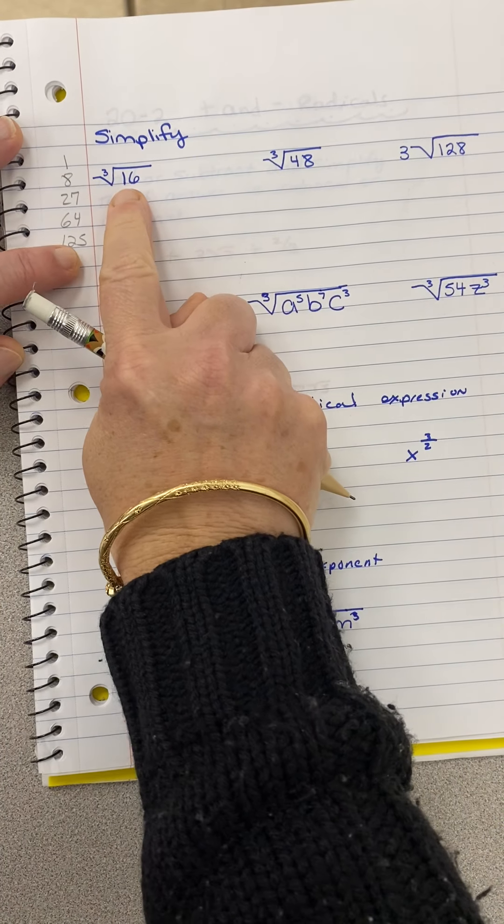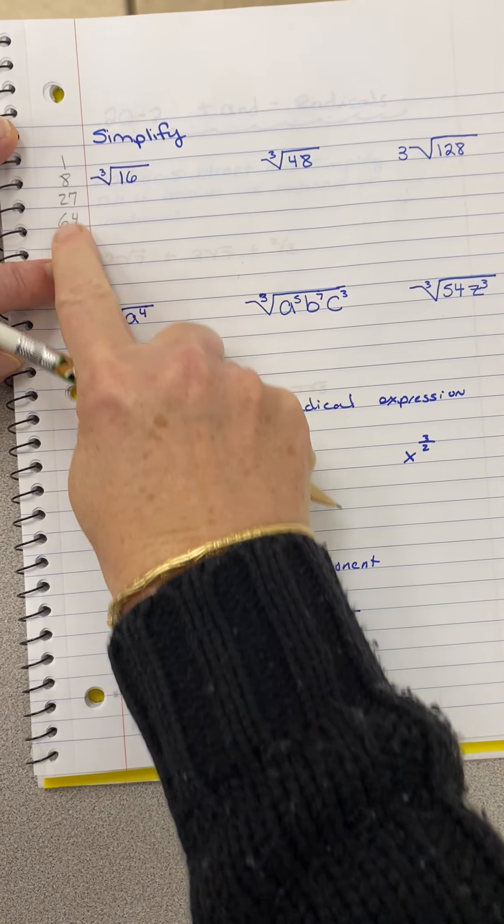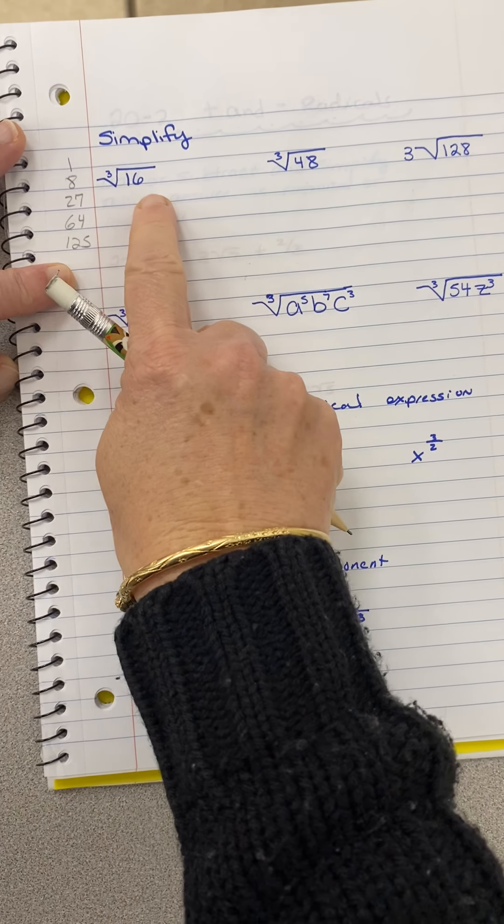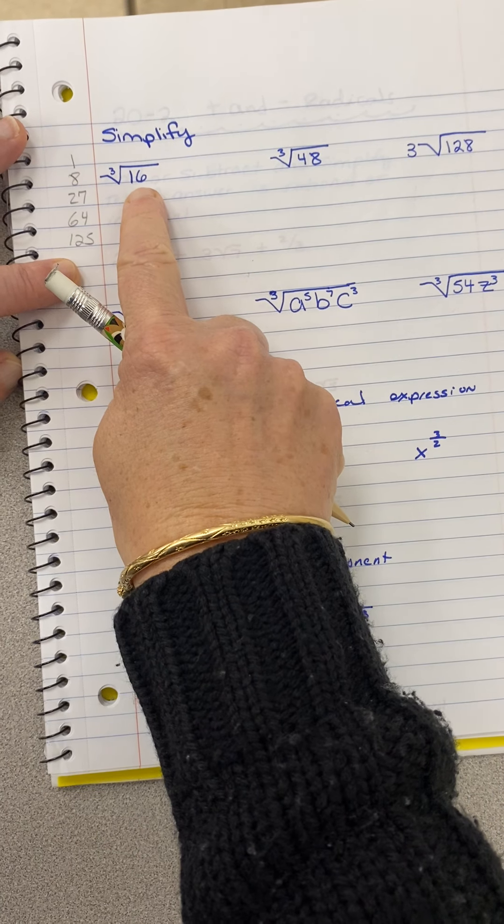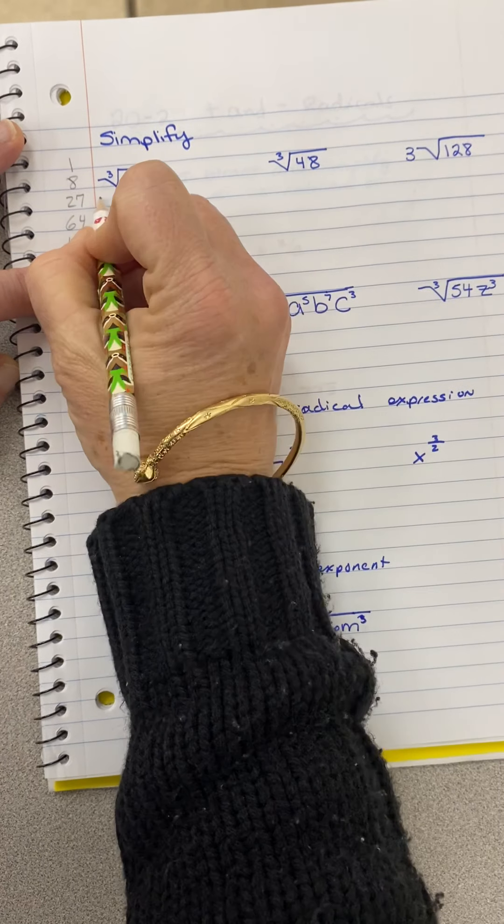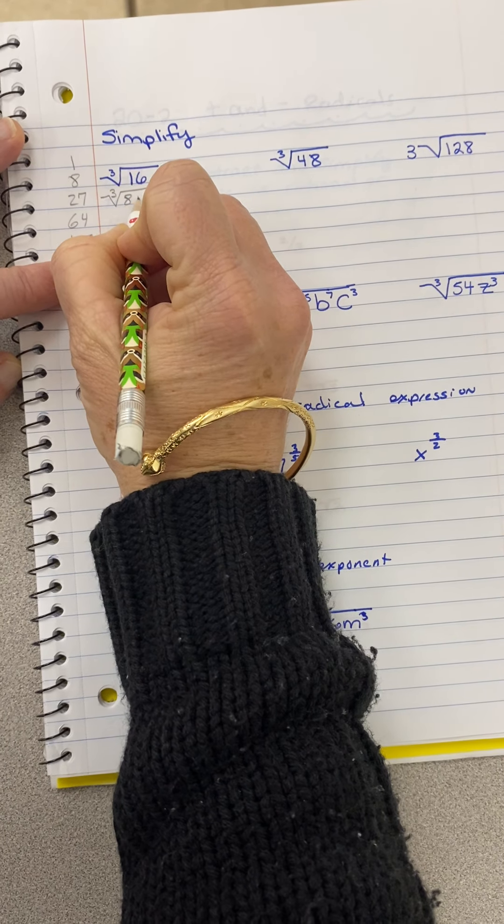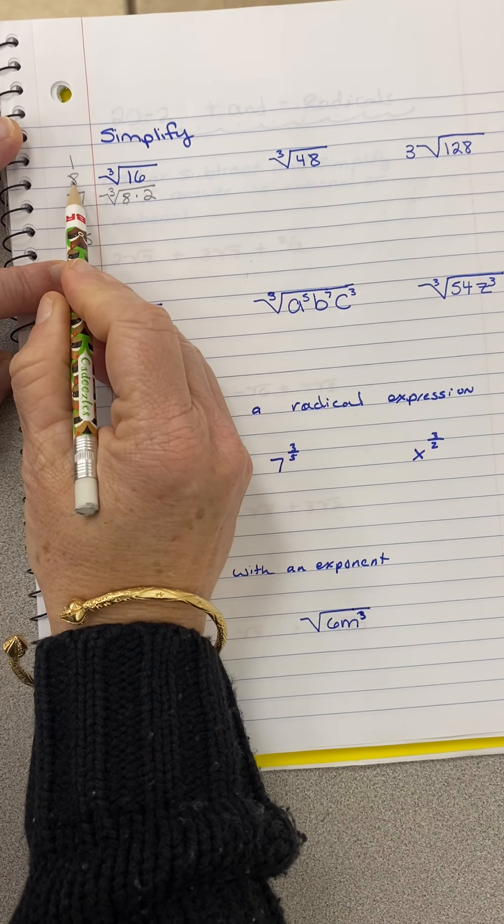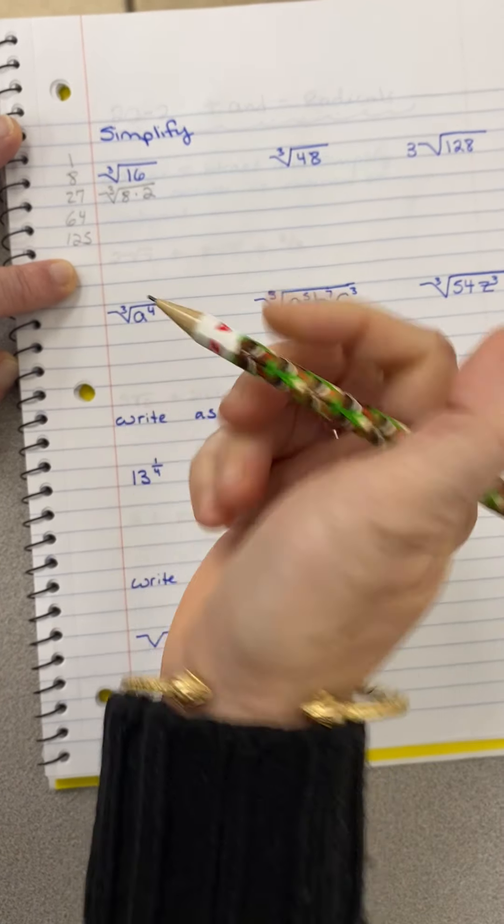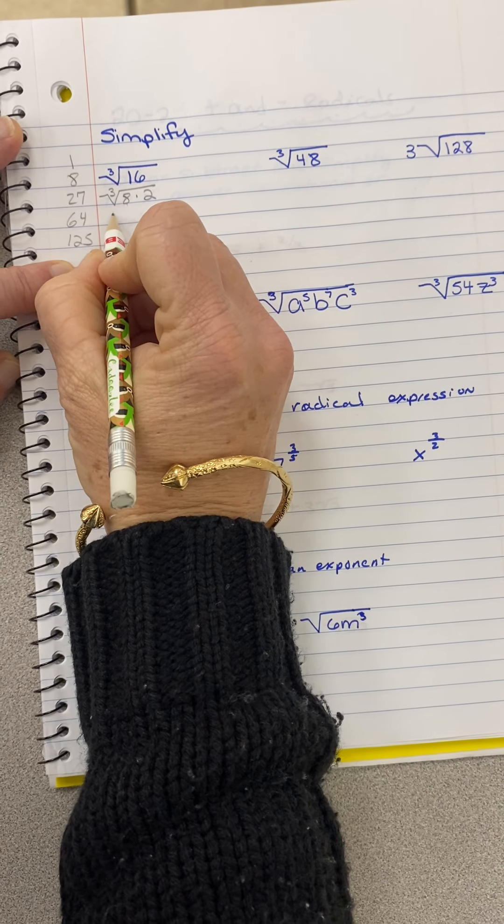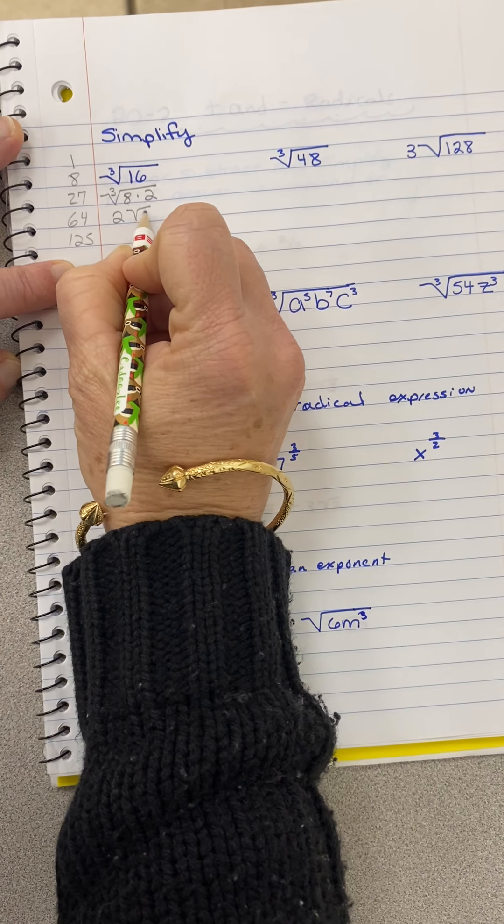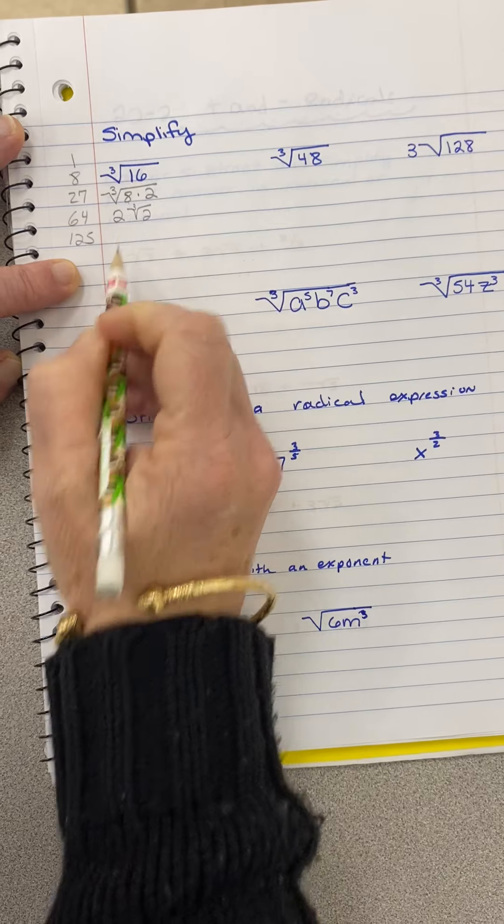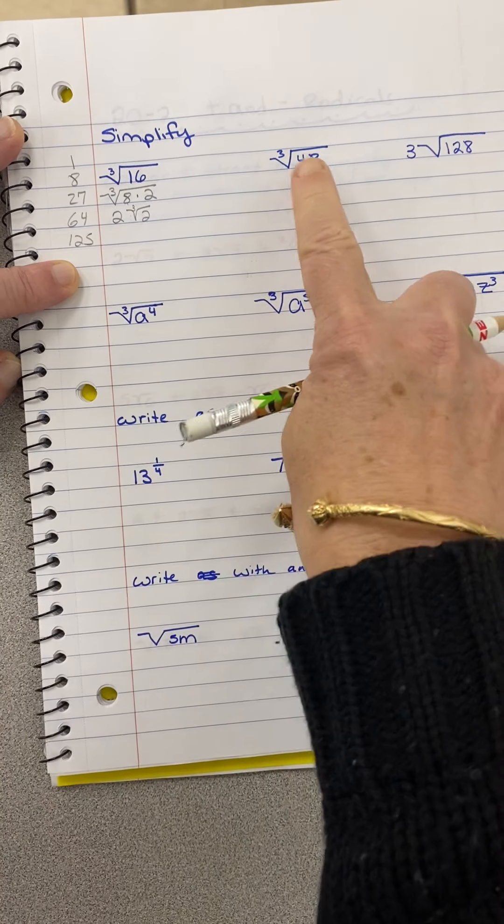So now I'm saying to myself, what perfect cube, now I have to use a number from this list, what perfect cube goes into 16? 8. 8 times 2 is 16. The cube root of 8, remember how did I get this number? I went 2 times 2 times 2. The cube root of 8 is 2, so that pops out. Remember to put my little index number of 3 there.